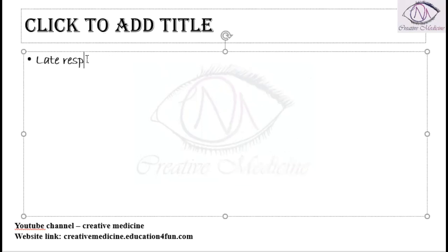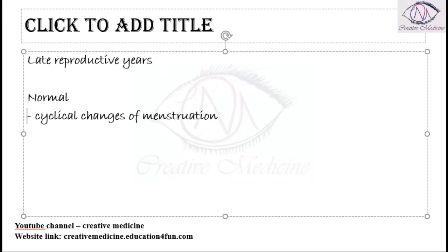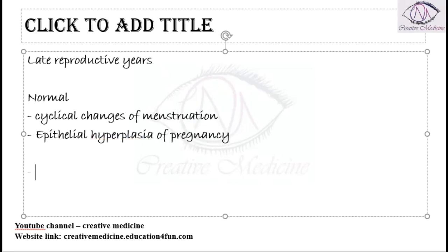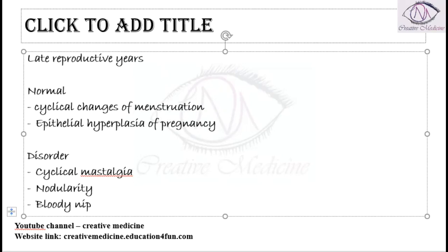In Late Reproductive Years, normally there will be cyclical changes of menstruation occurring with epithelial hyperplasia of pregnancy. If you see the disorders in Late Reproductive Years, we see the presence of Cyclical Mastalgia with Nodularity, and also Bloody Nipple Discharge is seen as a disorder.